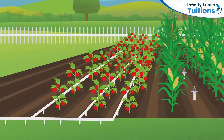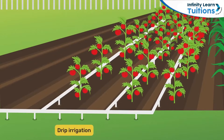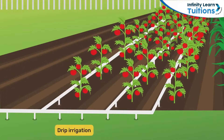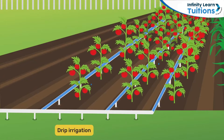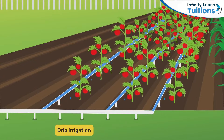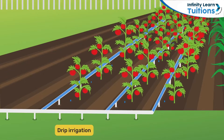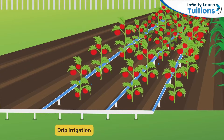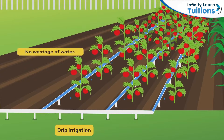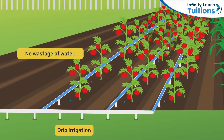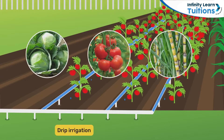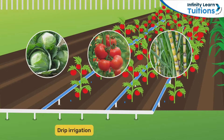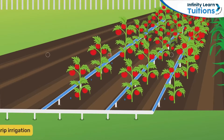In the drip system, a network of pipes with tiny holes is laid in a field. When water is pumped, it flows through these pipes and falls one drop at a time near the roots of the plants. As a result, barely any water is wasted and the use of water is minimal. Drip irrigation works best for irrigating individual plants, trees, or row crops like vegetables and sugarcane.